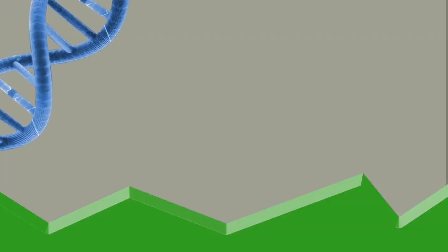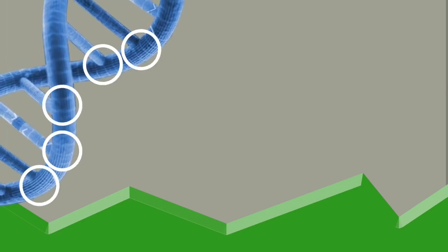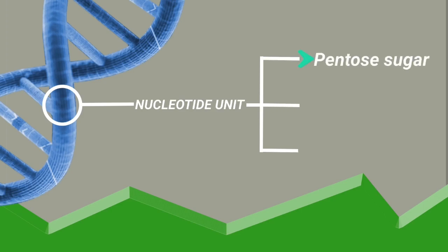Each polynucleotide chain of DNA has a series of nucleotide units. Each nucleotide unit has three important components: deoxyribose sugar, also known as pentose sugar; phosphate group; and nitrogenous base.